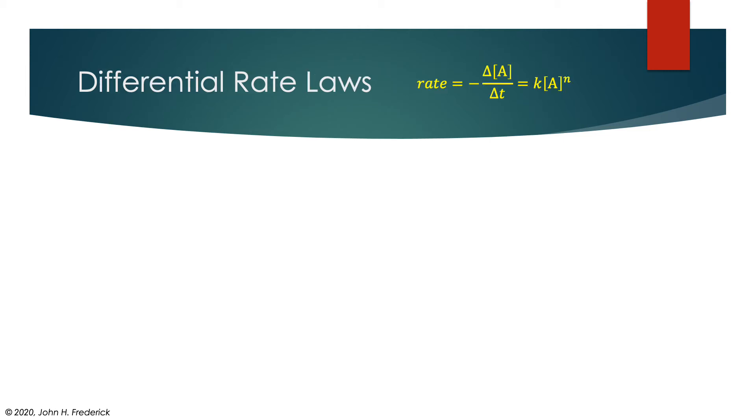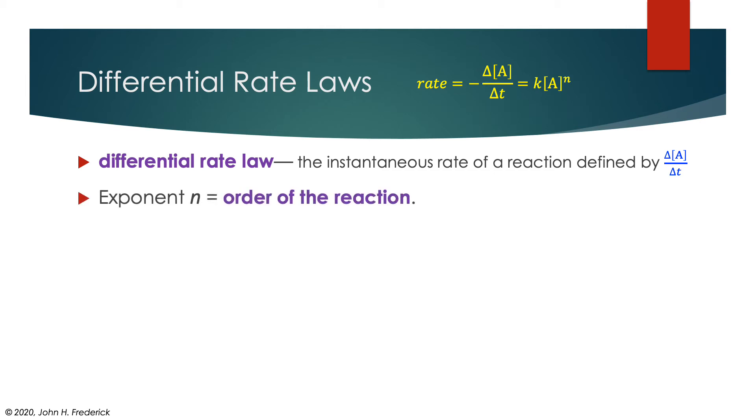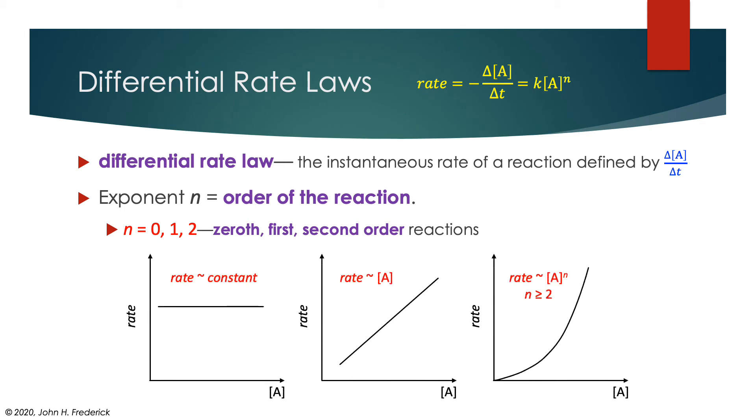Let's explore this a little bit farther by looking at these differential rate laws. What we've drawn here is a differential rate law. It's called that because it refers to the instantaneous rate of the reaction, which is defined by the change in the concentration over the change in time. Now, I wrote that as being equal to the concentration raised to the power A raised to the n power. n is actually called the order of the reaction. And there are three orders that we're going to primarily concern ourselves with, 0, 1, and 2, which we would call zeroth, first, and second order reactions.